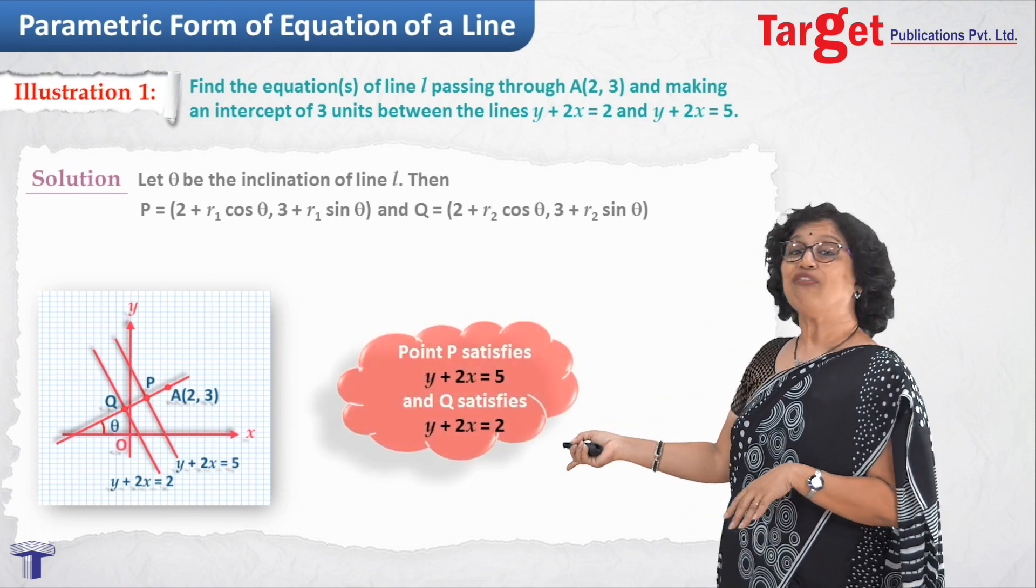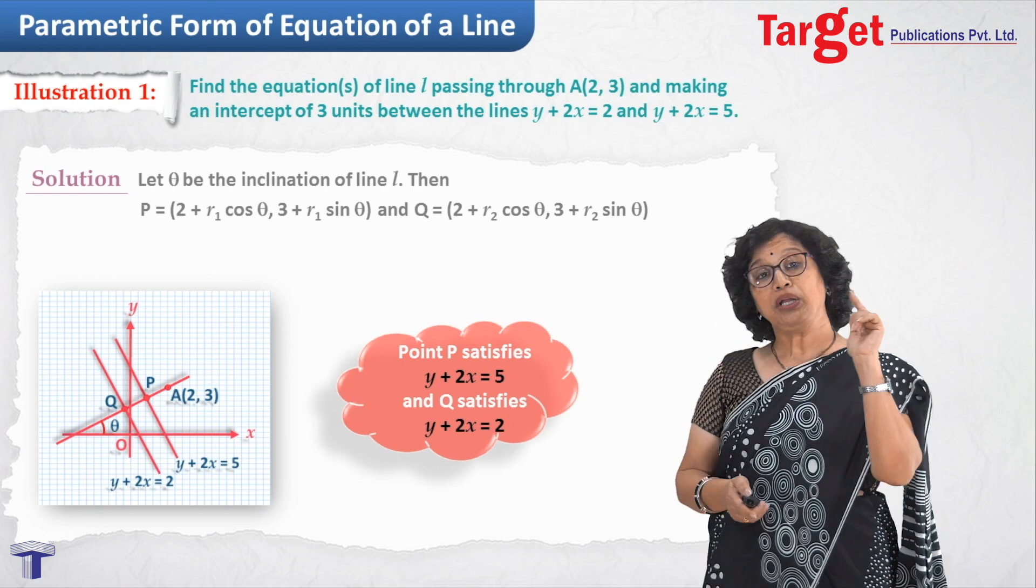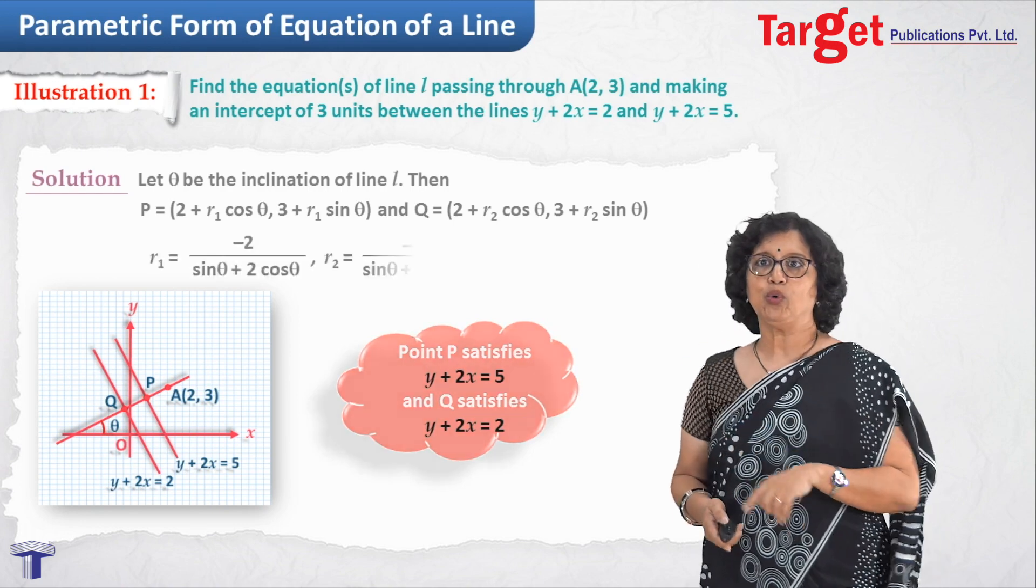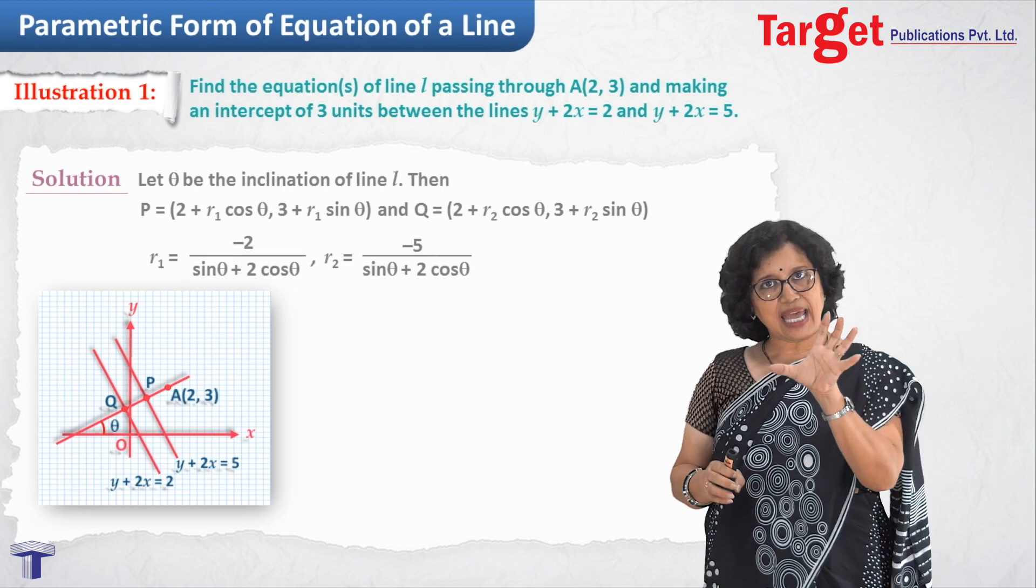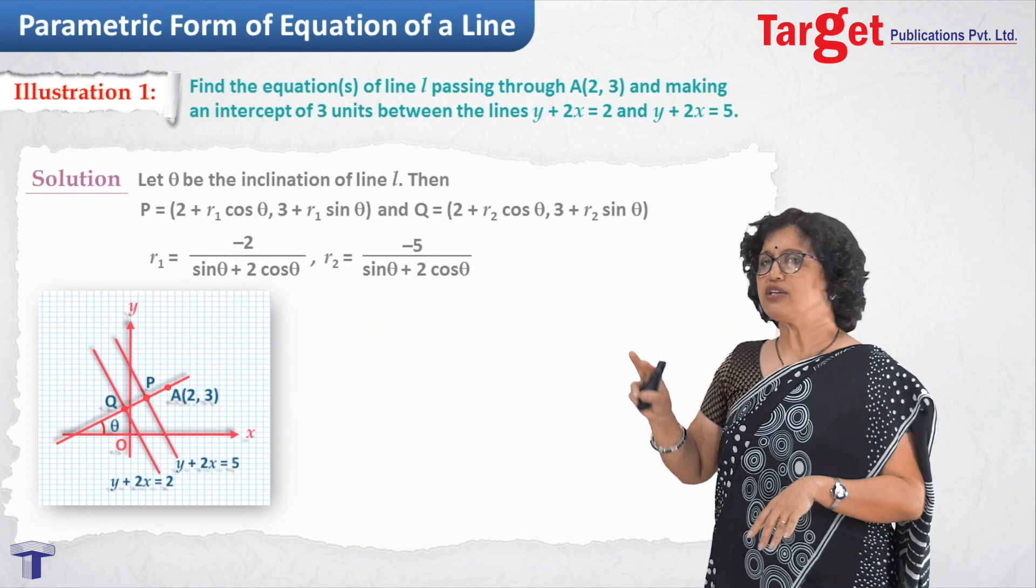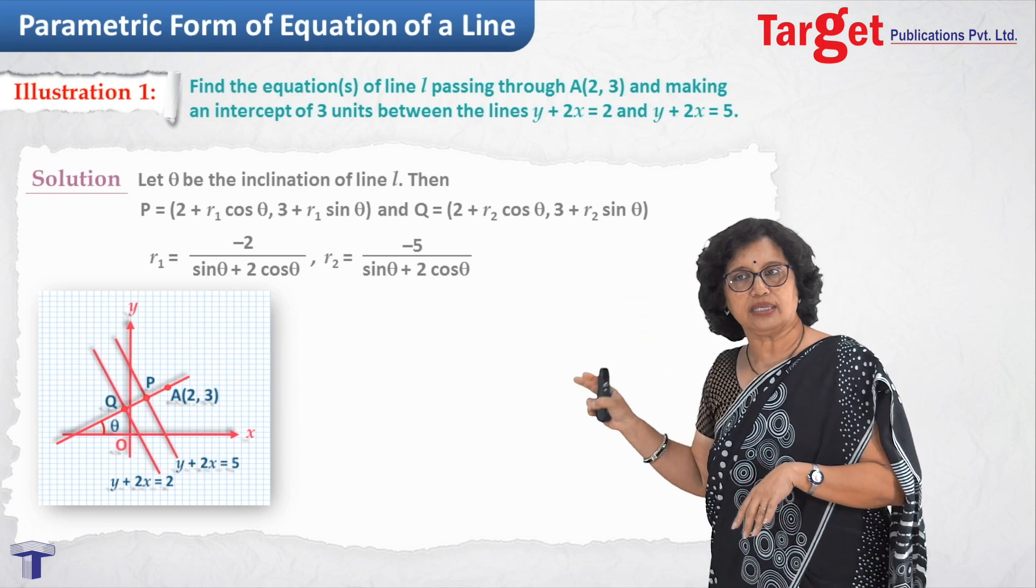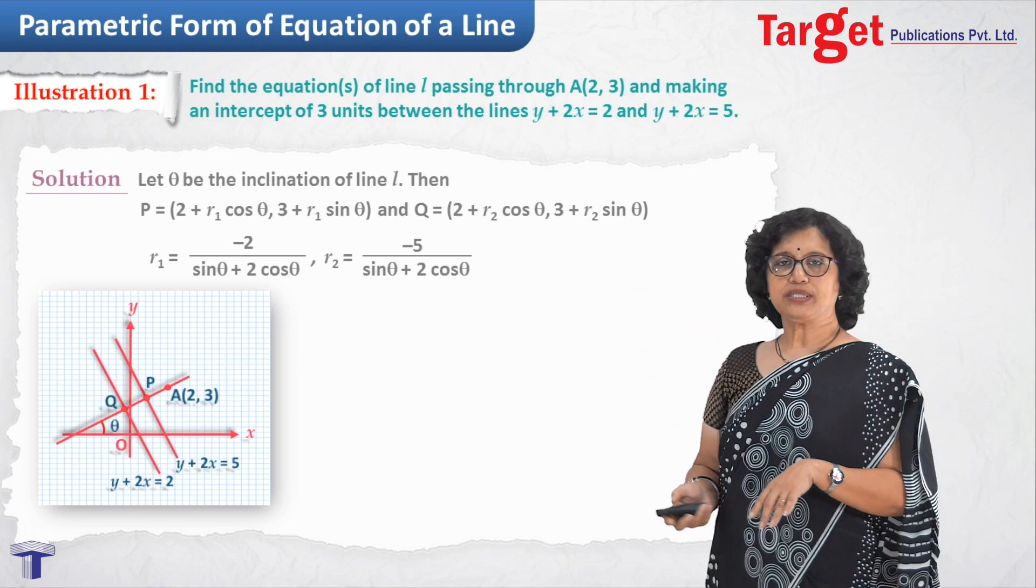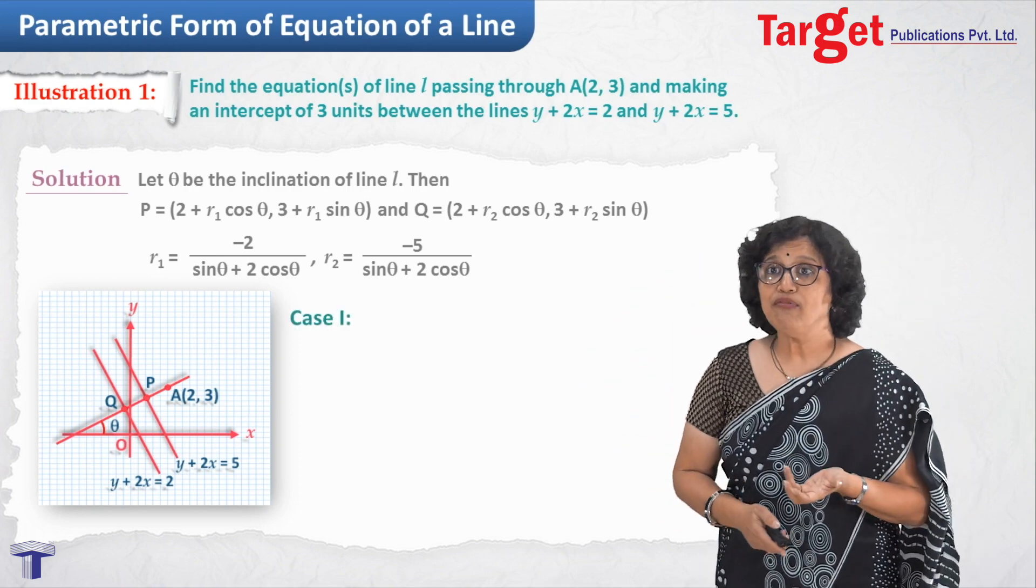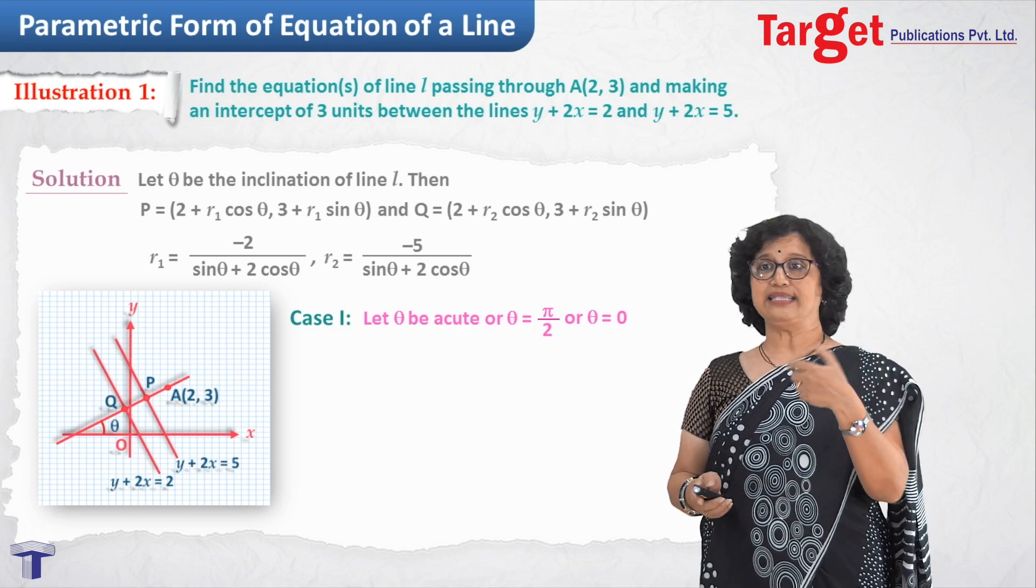Now we will have to use point P on y plus 2x equal to 5, point Q on line y plus 2x equal to 2. And actually on substitution, from there after simplification, you will get r1 equal to minus 2 upon sin theta plus 2 cos theta and r2 equal to minus 5 upon sin theta plus 2 cos theta.